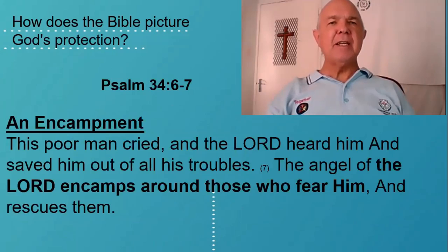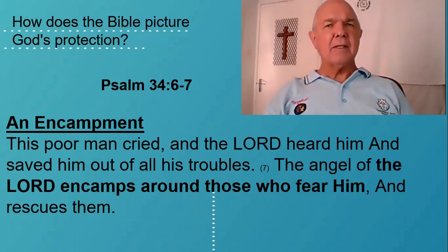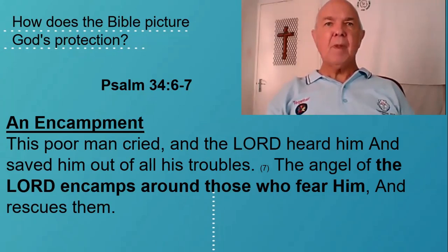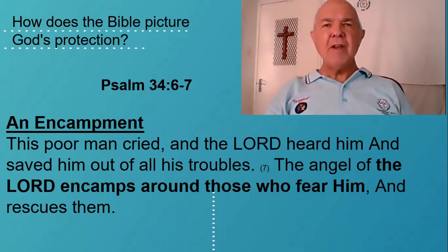The second imagery is an encampment. In Psalm 34 verse 6-7: 'This poor man cried and the Lord heard him, and he saved him out of his troubles. The angel of the Lord encamps around those who fear him and rescues them.' Here the Bible tells us that the angel of the Lord — a term often used for the Lord Jesus in the Old Testament — encamps around those that fear him. This word 'encamps' has a Hebrew meaning of 'abides with' or 'pitches his tent,' and this is done around the believer — to encircle or to be on every side — so the one who fears the Lord is protected on every side by the presence of him who dwells with the believer.